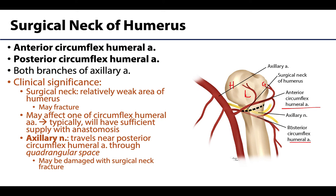Also of note, the axillary nerve travels in close proximity to the posterior circumflex humeral artery through the quadrangular space, and both then wrap around the posterior portions of the surgical neck of the humerus. Therefore, the axillary nerve may also be affected in a fracture of the surgical neck, which could affect motor supply to the deltoid muscle and cutaneous sensation of the skin around the shoulder region. The close geographical proximity of these two structures — both through the quadrangular space and around the surgical neck — is something that is often tested.